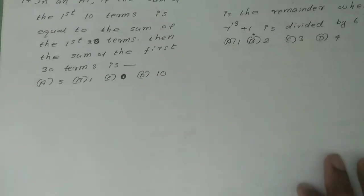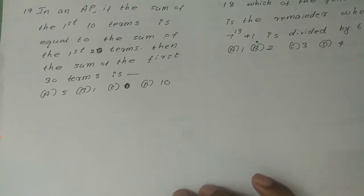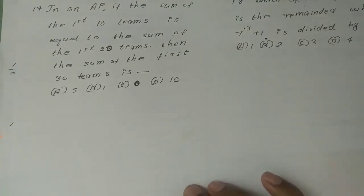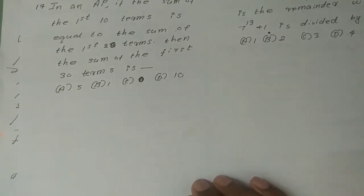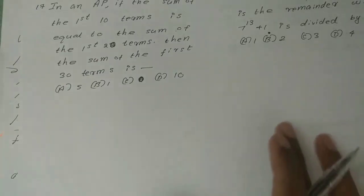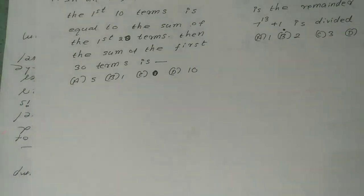Welcome to Kandala Physics Academy. We are going to discuss the Category 3 Maths February 2020 exam. The question is: if in an AP the sum of the first 10 terms is equal to the sum of the first 20 terms, then the sum of the first 30 terms is — option A: 5, option B: 1, option C: 0, option D: 10.